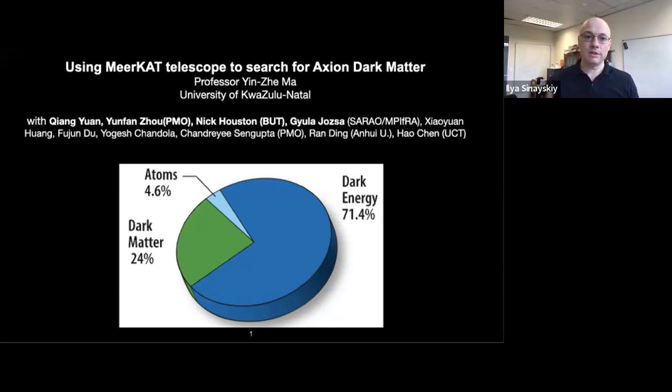It's my pleasure to introduce Professor Yin-Zhe Ma from University of KwaZulu-Natal. He will tell us about using the MeerKAT telescope to do constraints on axion dark matter. Professor Ma obtained his PhD in astronomy from University of Cambridge and conducted several postdoctoral fellowships at British Columbia and University of Manchester.